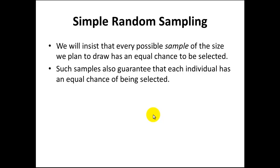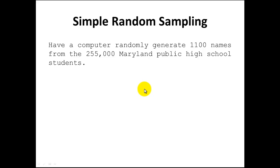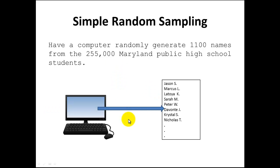A real sort of primitive way of thinking about this is to think about names in a hat. When you place everyone's names in a hat, mix them up and select one, you feel comfortable knowing that everyone had an equal chance of being selected. A more modern way of doing that is to have a computer randomly generate, in this case, our 1100 students' names from the approximately 255,000 Maryland public high school students. That's an example of simple random sampling.